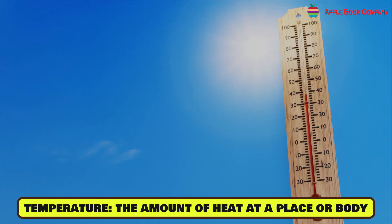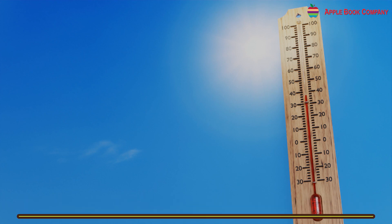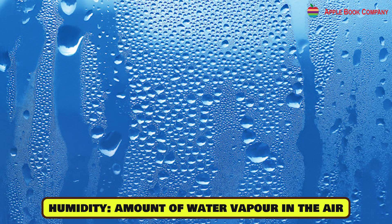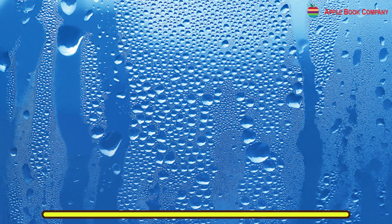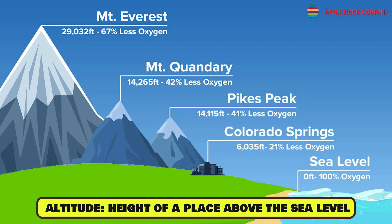Temperature is the amount of heat at a place or body. Humidity is the amount of water vapor in the air. Altitude is the height of a place above sea level.